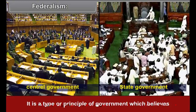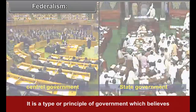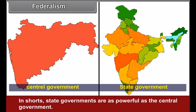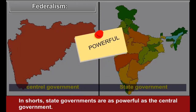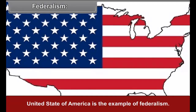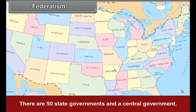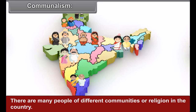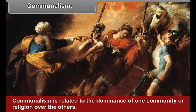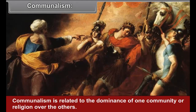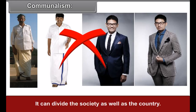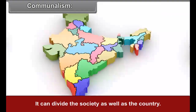Federalism: It is a type or principle of government which believes in equal distribution of power between the central government and state governments. In short, state governments are as powerful as the central government. The United States of America is an example of federalism, with 50 state governments and a central government. Communalism: There are many people of different communities or religions in the country. Communalism is related to the dominance of one community or religion over others. Due to communalism, two communities or religions cannot live together, which can divide society as well as the country.